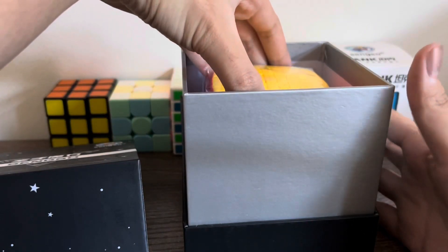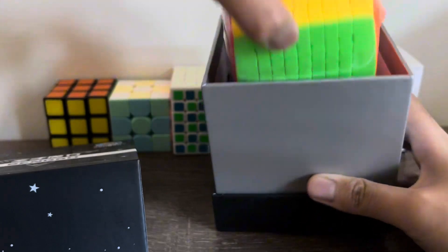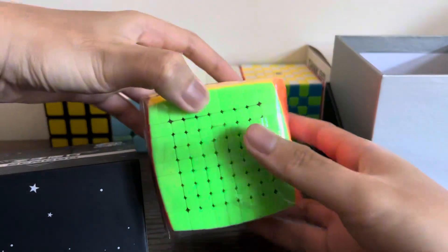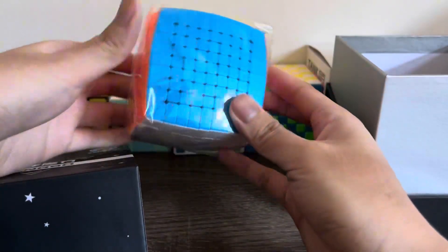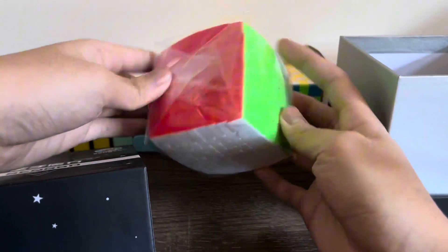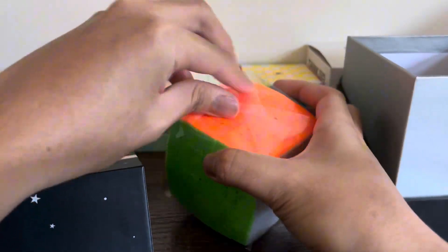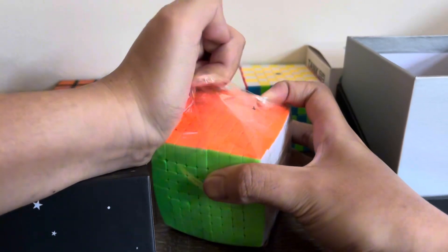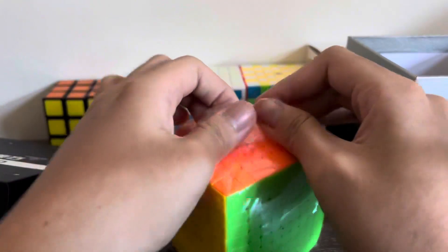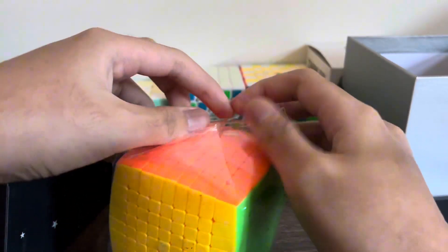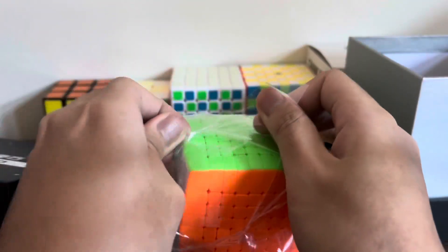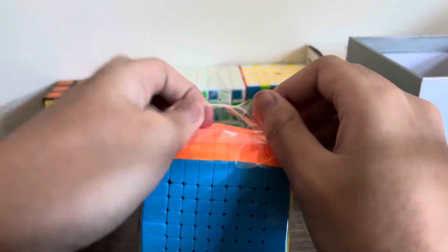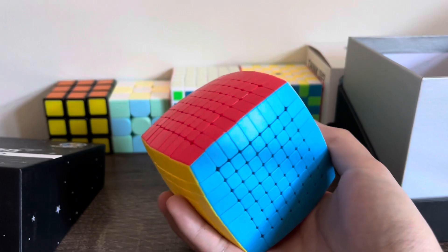So here is the cube itself. It's pillowed. And now I am unraveling the cube and here is the cube.